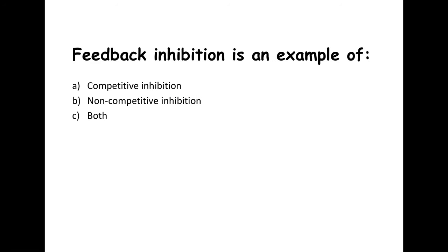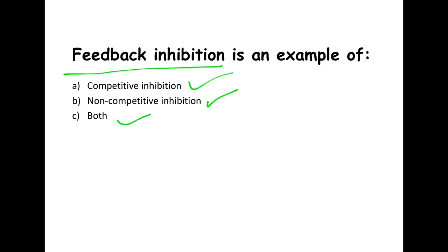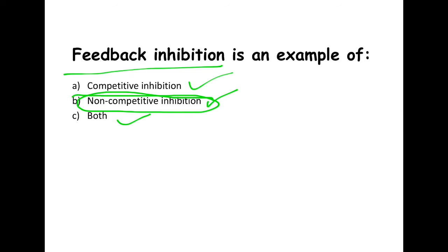Next question: feedback inhibition is an example of — competitive inhibition, non-competitive inhibition, or both? The answer is non-competitive inhibition. Remember, feedback inhibition involves the end product sitting in the allosteric site, which causes the active site to change shape — that's non-competitive inhibition.